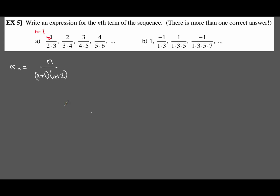Always double-check your formula. Plugging in 2: numerator is 2, denominator is 2 plus 1 equals 3 and 2 plus 2 equals 4 — that matches. Plugging in 3: numerator 3, denominator 4 and 5 — matches. Plugging in 4: numerator 4, denominator 5 and 6 — matches. All terms line up correctly.